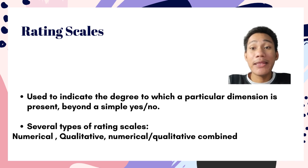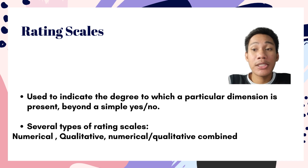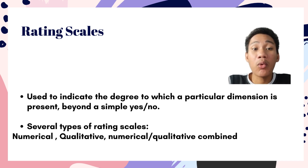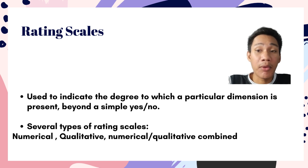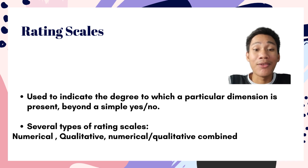Next is the rating scale. A rating scale is used to indicate the degree to which a particular dimension is present, and it goes beyond just a simple yes or no. A rating scale provides a way to record and communicate qualitatively the different levels of performance of learners. It also has several types: numerical, qualitative, and numerical and qualitative combined.